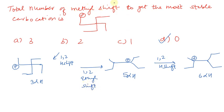So finally our compound becomes like this after the rearrangement. What happened here? Ethyl shifting — 1 ethyl shift. So in total: 2 hydride shifts and 1 ethyl shift. The question asked about methyl shifting — methyl shifting was not done at all. 2 hydride shifts and 1 ethyl shift. Many people will mark 3 as the answer, confusing ethyl shift with methyl shift. We have to focus — this is what makes this question tricky and conceptual.